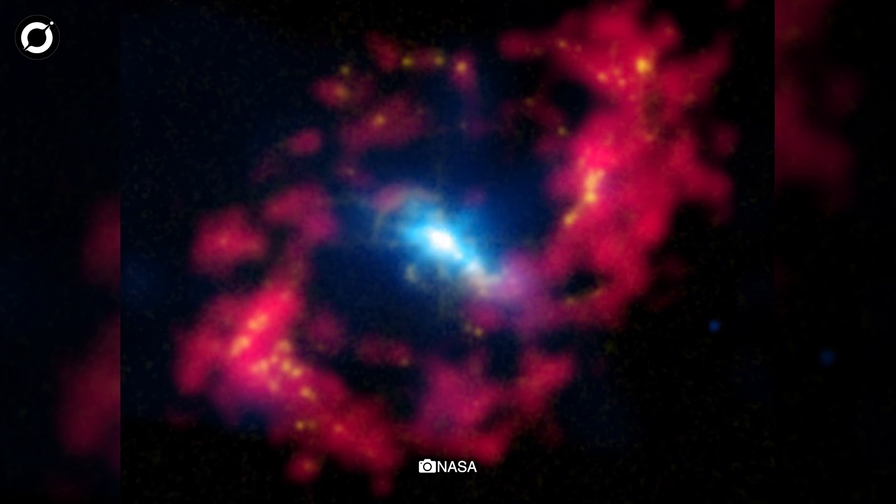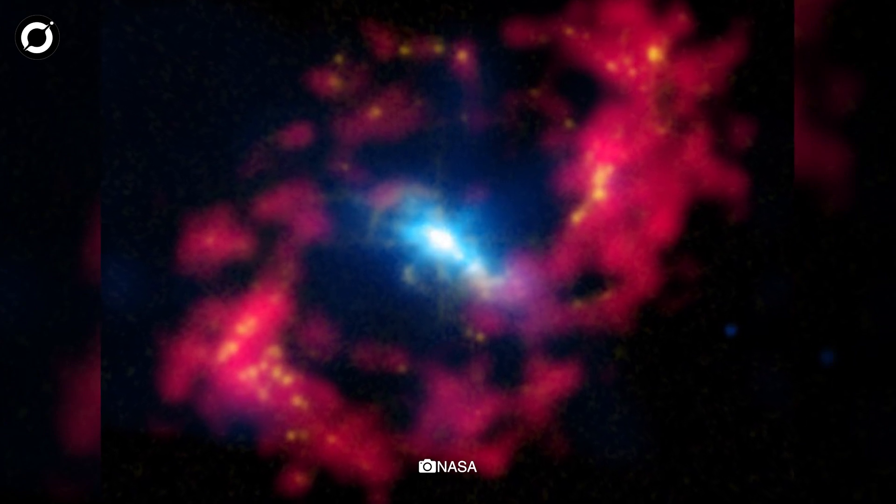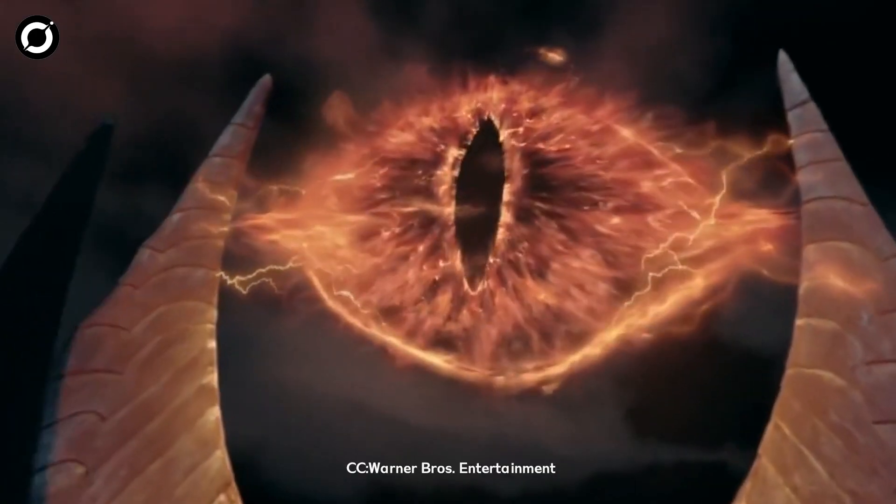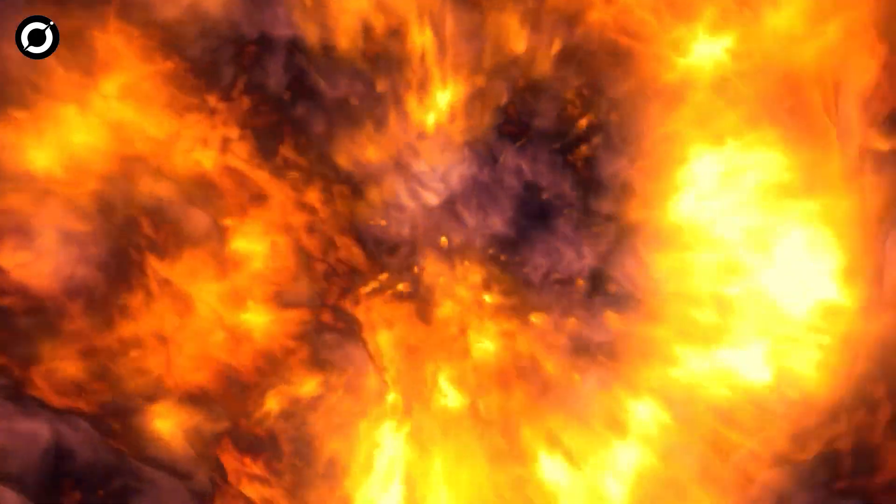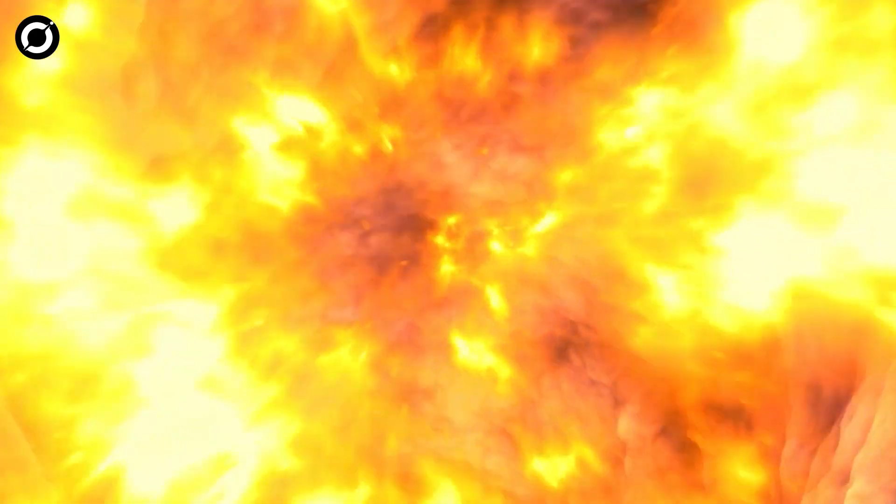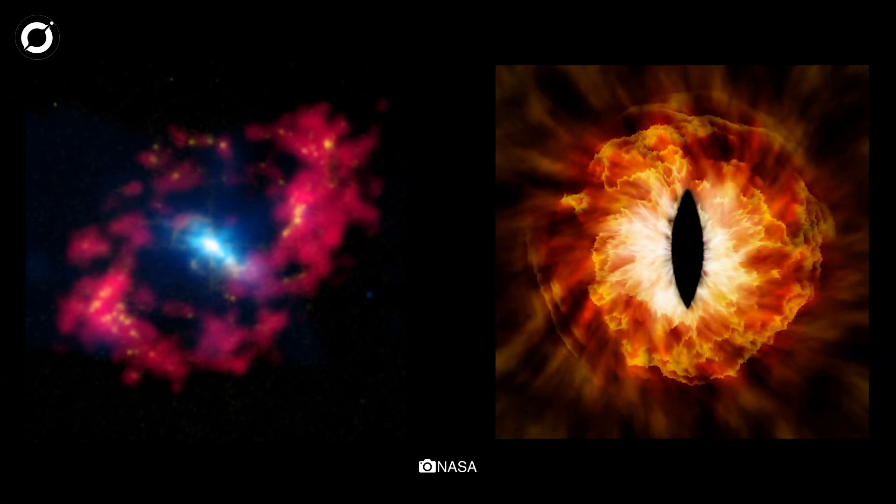Astronomers nicknamed the galaxy the Eye of Sauron because its central region looks like the fiery eye of the evil ruler of Mordor. It's easiest to notice in false color images, where radio emissions from clumps of hydrogen gas stand out in fiery red. And once you see it, you can't unsee it.